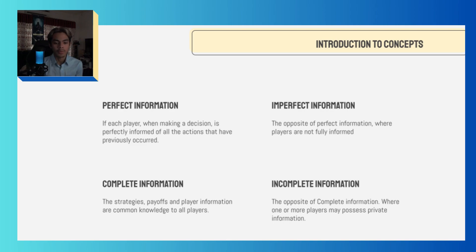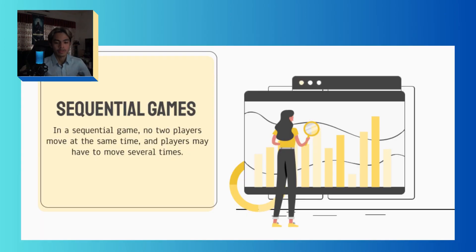Complete information means the strategies, payoffs, and player information are common knowledge to all players. Incomplete information is the opposite, where one or more players may possess private information. In a sequential game, no two players move at the same time, and players may have to move several times.